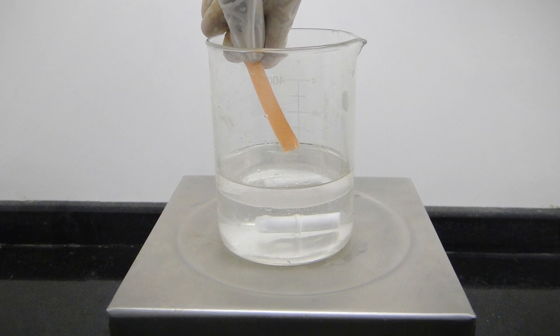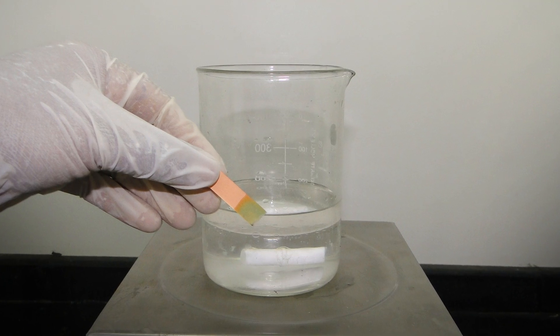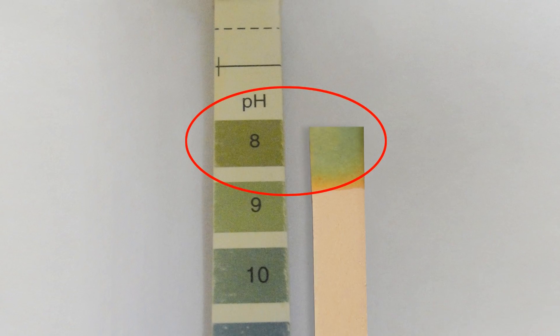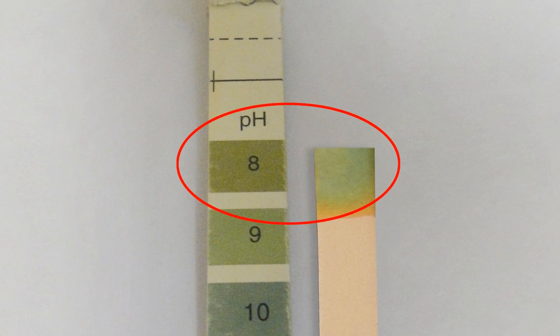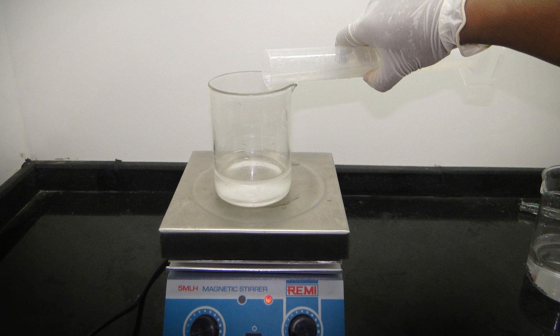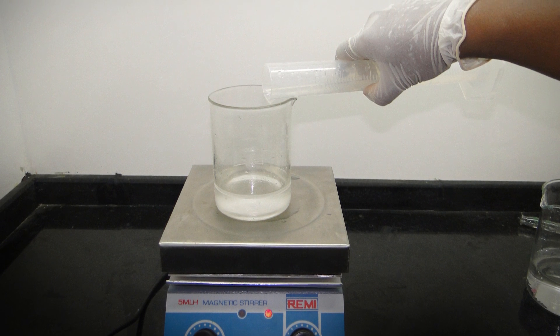Check the pH of the TE by dropping approximately 10 microliters onto pH paper. The pH should be approximately 8. If it is still too high, perform additional TE equilibration steps.